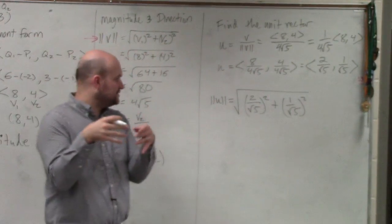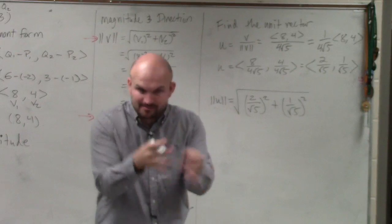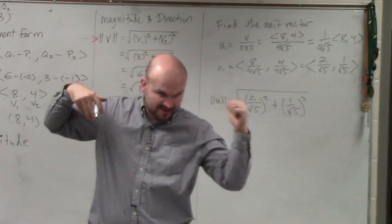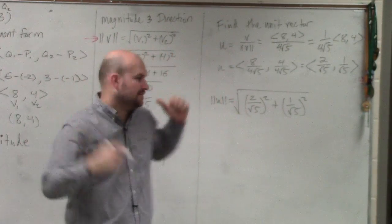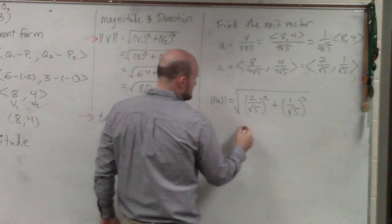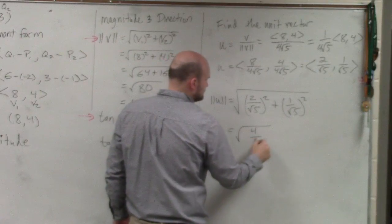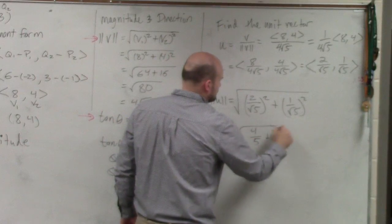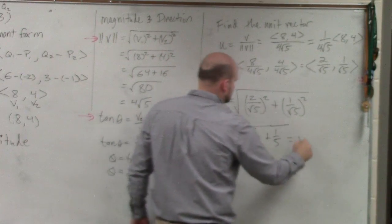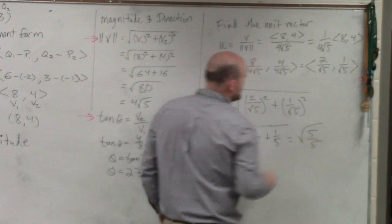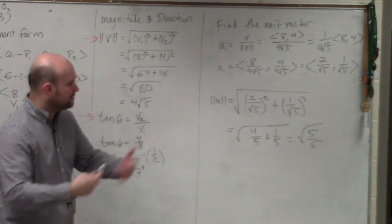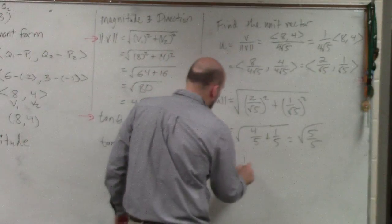Let's confirm this magnitude of this. You're never going to need to do this. I'm just showing you this. This unit vector that we just created has a magnitude of 1. 2 squared plus 1 squared, all over square root of 5 squared, is square root of 5 over 5, which is square root of 1. Square root of 1 is 1.